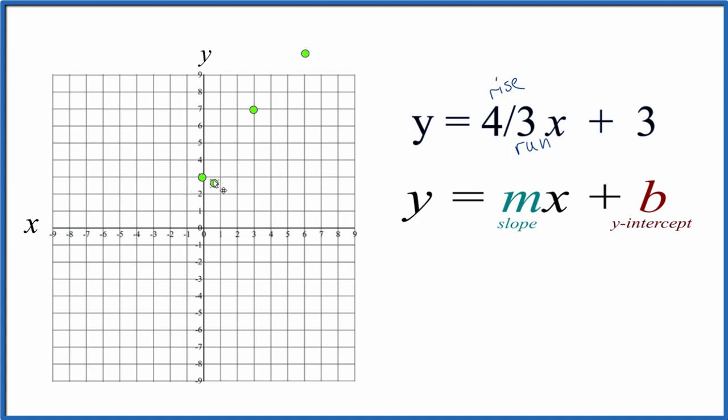Let's do another point, but this time we're going to go the opposite direction. We're going to go down 1, 2, 3, 4, and to the left 1, 2, 3. And that's also on our line.